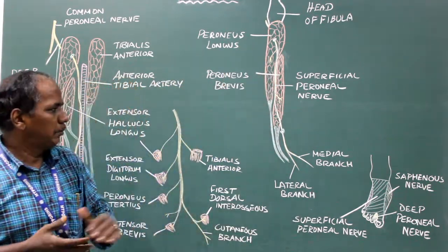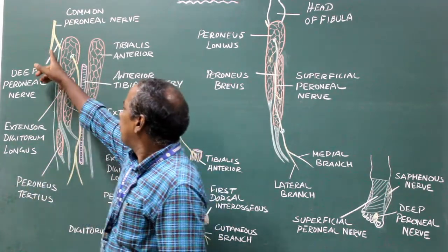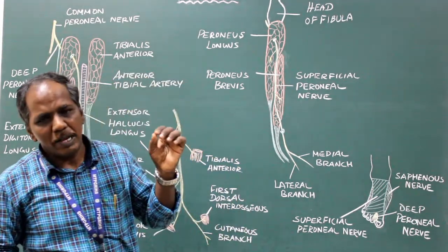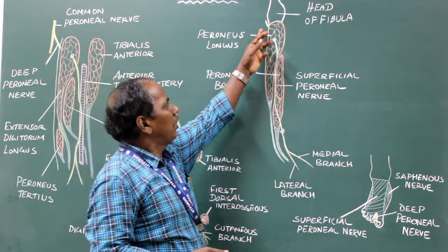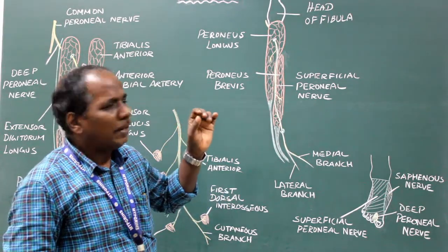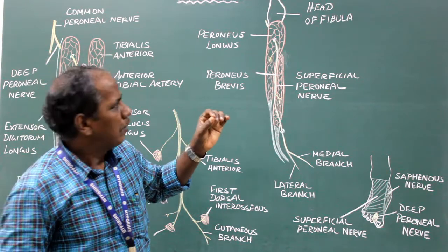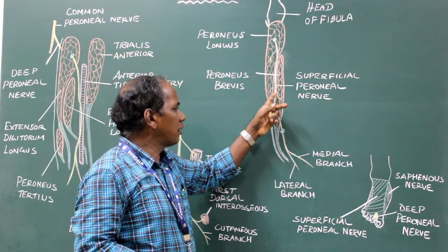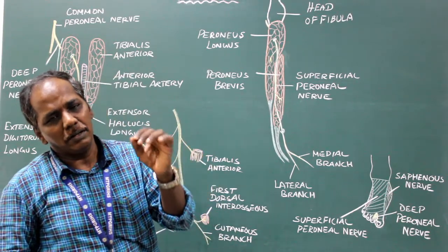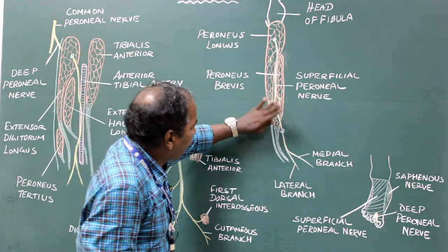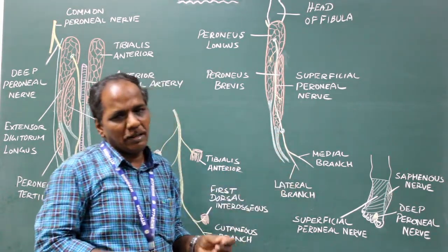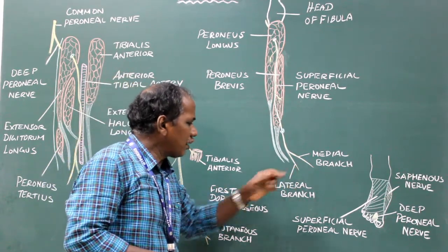The superficial peroneal nerve is one of the branches of the common peroneal nerve. Near the neck of the fibula, it enters the lateral compartment of the leg between the peroneus longus and peroneus brevis. The nerve then lies between peroneus brevis and extensor digitorum longus. At the junction of the upper two-thirds and lower one-third of the leg, the nerve pierces the deep fascia and becomes superficial, where it divides into medial and lateral terminal branches.